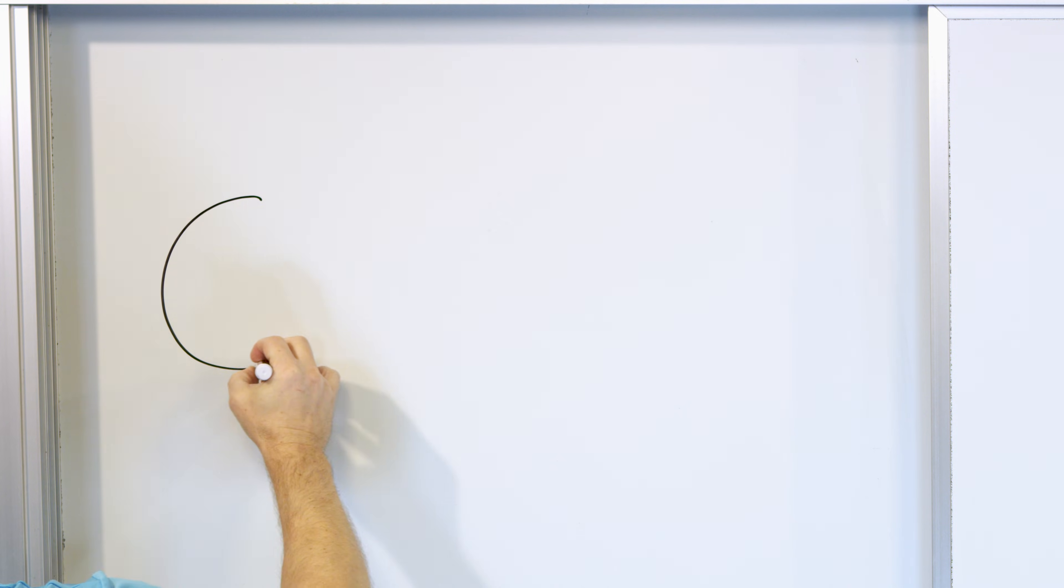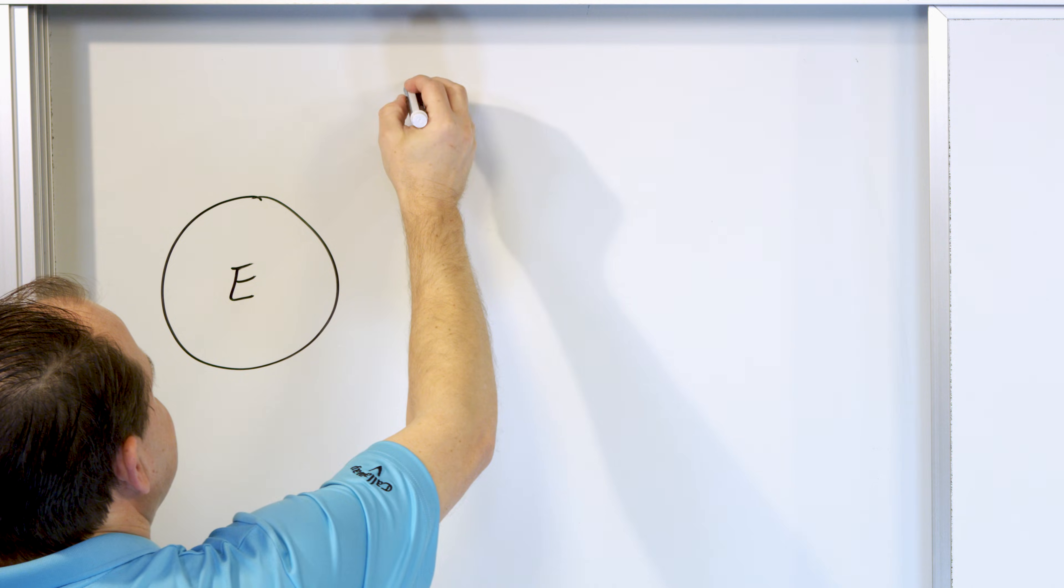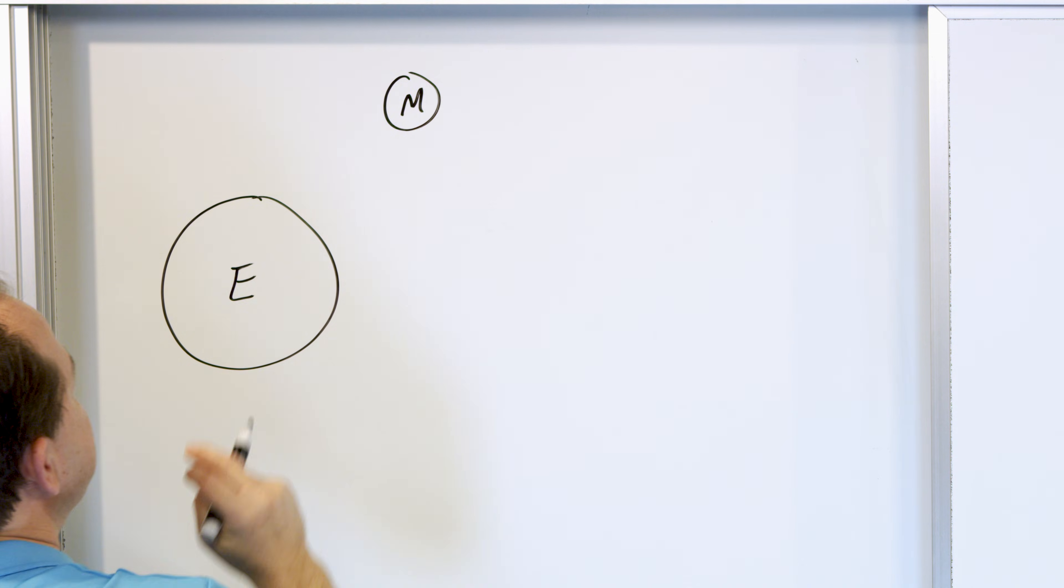So in general, here we have the big old planet Earth, we'll call that E. And just to talk about something, we'll talk about the moon, which is, we all know, orbiting the Earth.